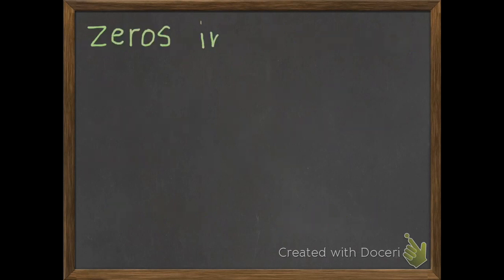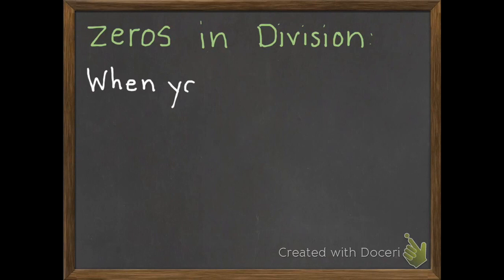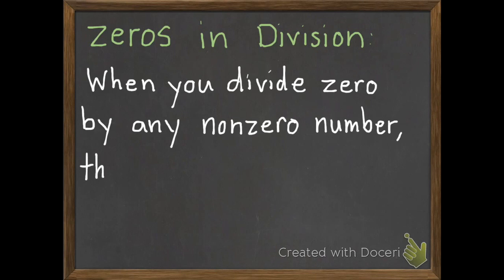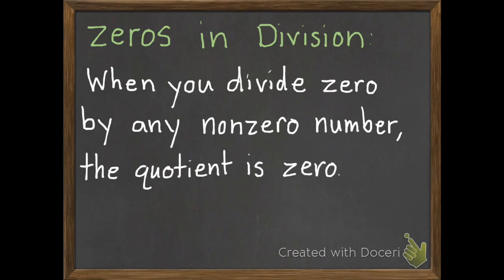Now we have our division rules. We have two of them. The first is zeros in division. It says when you divide 0 by any non-zero number, the quotient is 0.